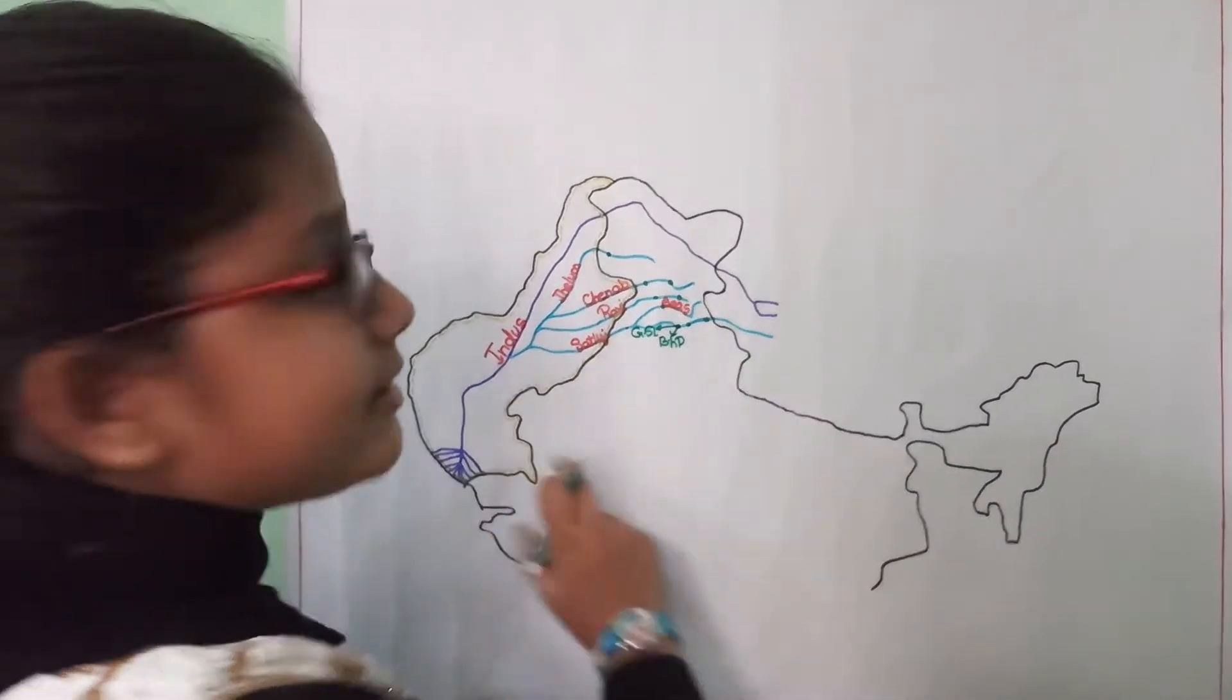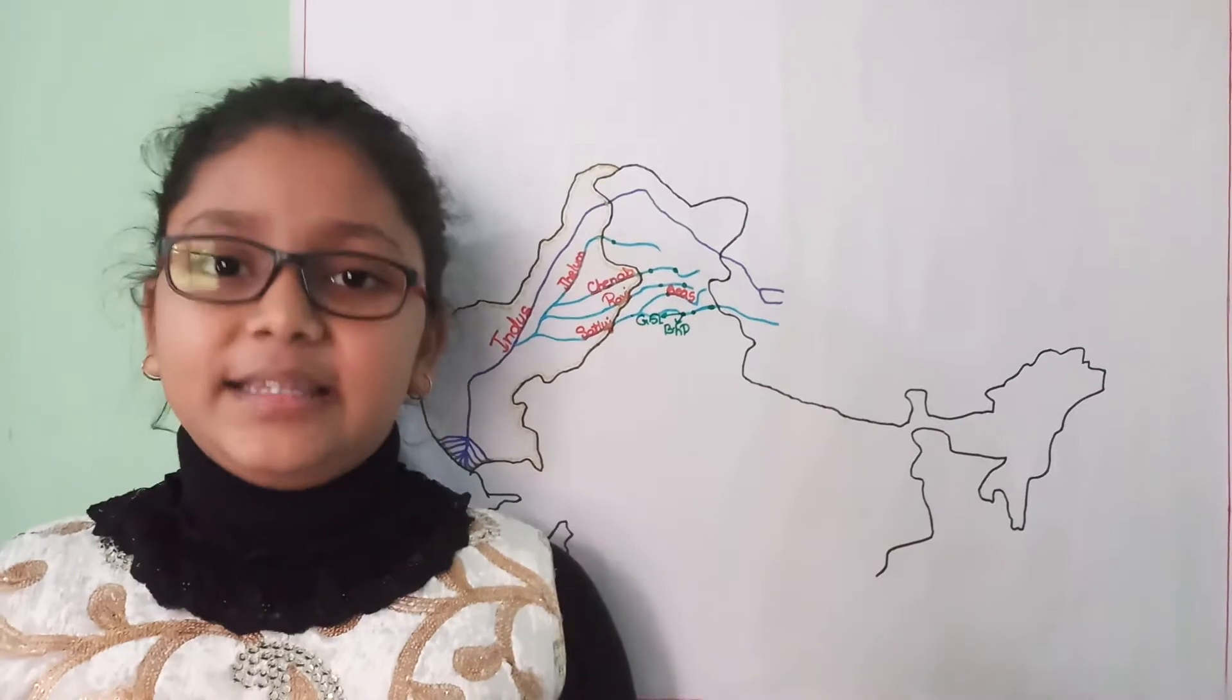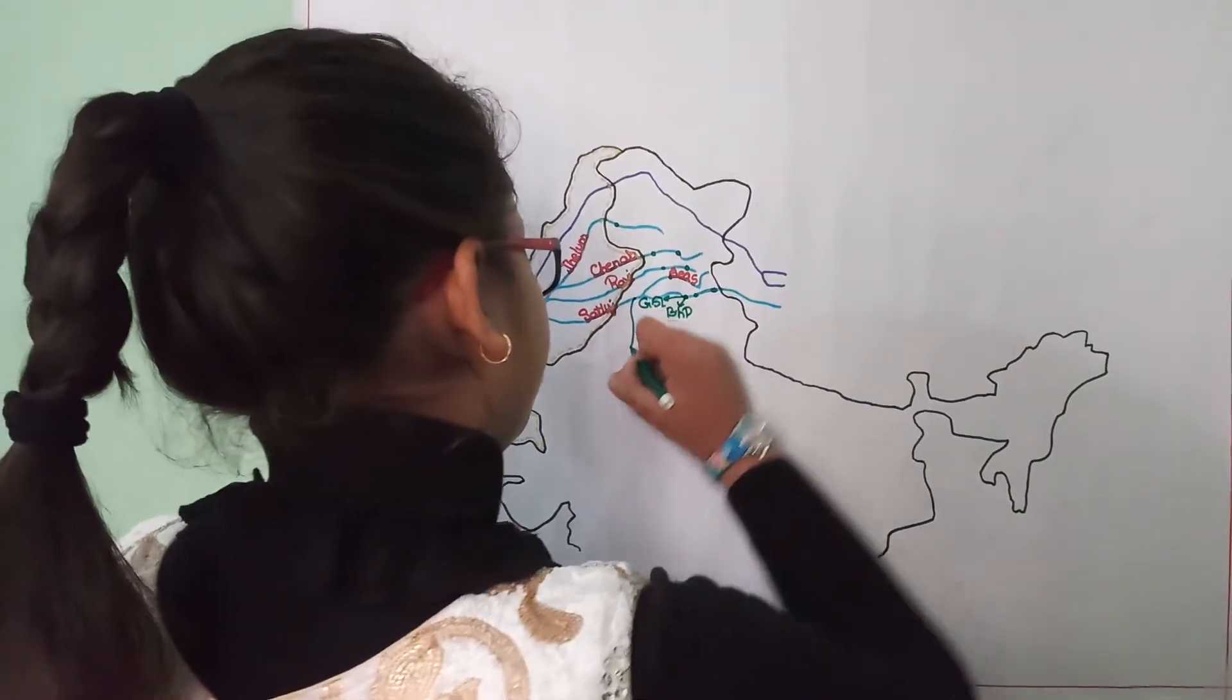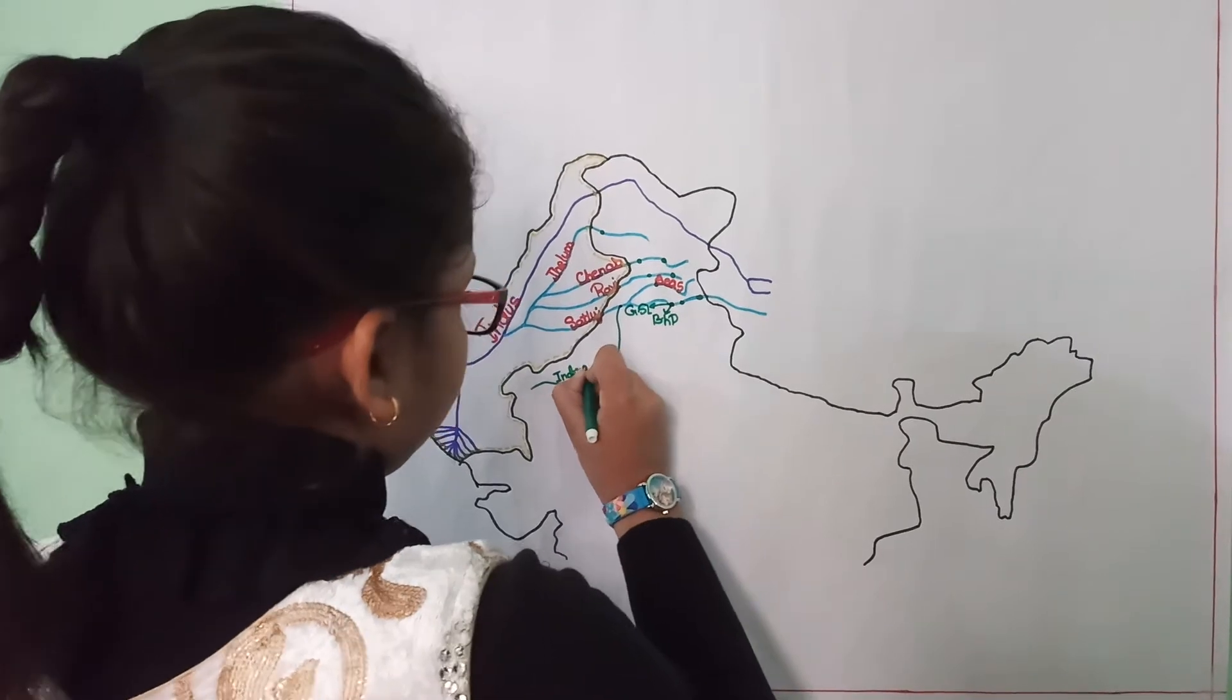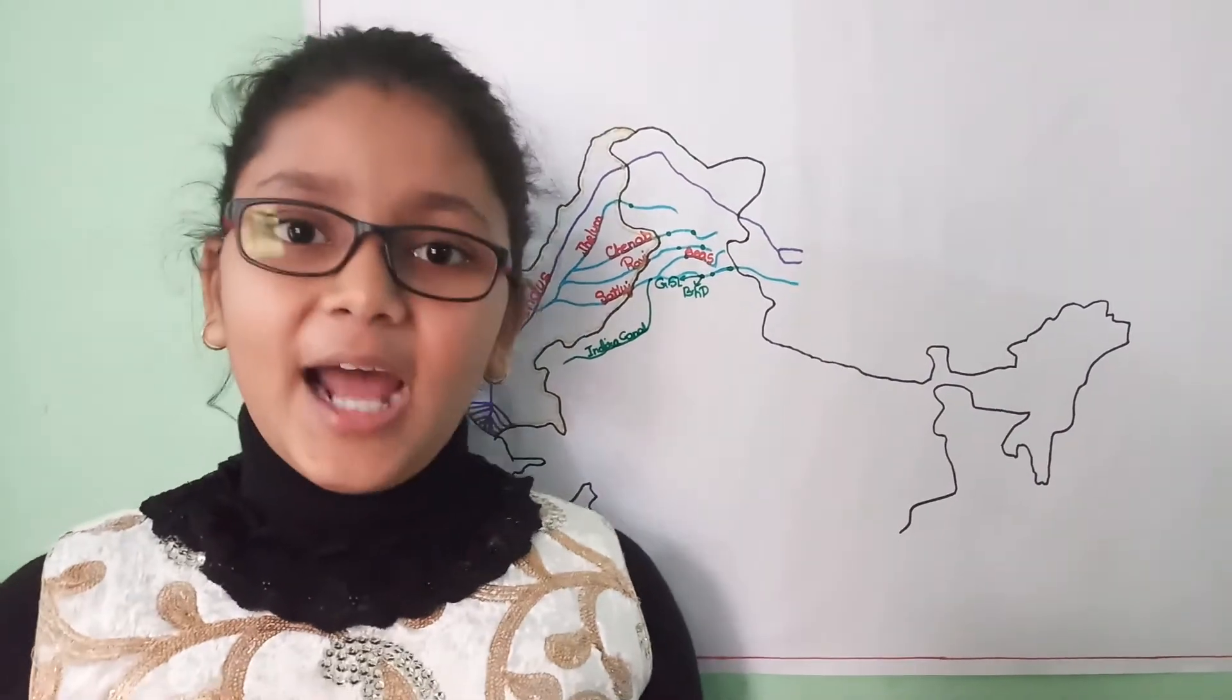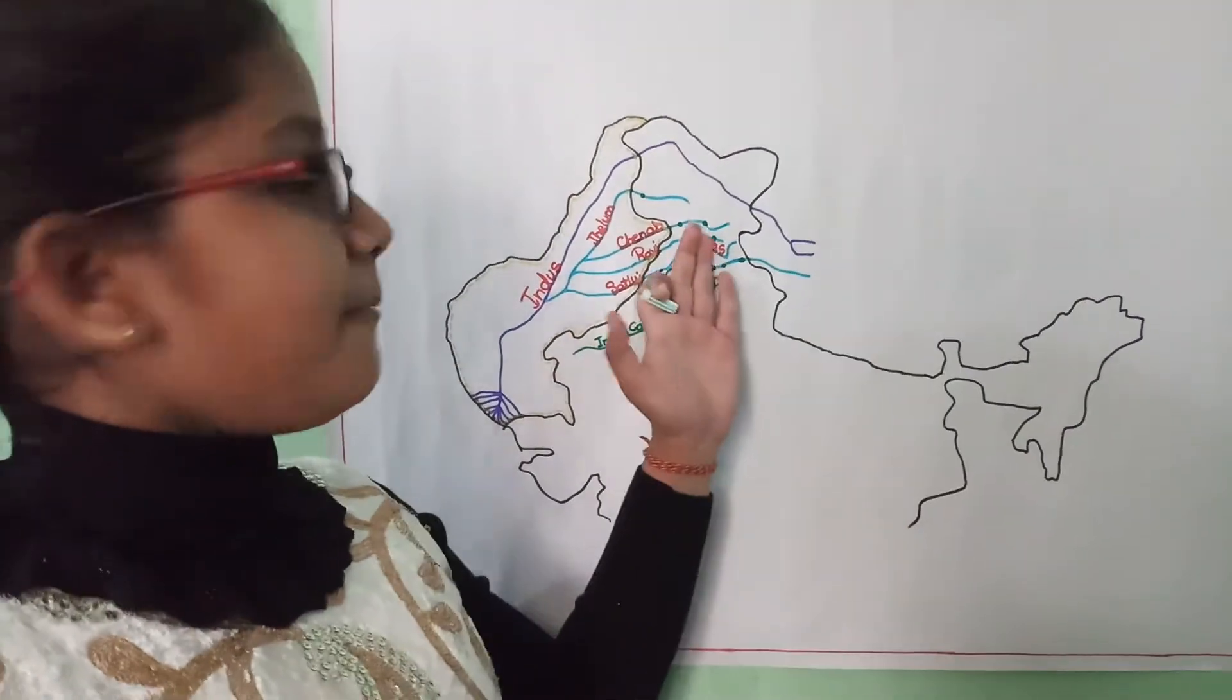And its water is distributed in the states of Punjab, Haryana, and Rajasthan. The second project is the Indira Gandhi Project or the Indira Gandhi Canal. Earlier we called it the Rajasthan Canal. So it is here. It is on the confluence of Satluj and Beas River, and it starts from the Harike Barrage. It facilitates the states of Punjab, Haryana, and Rajasthan.